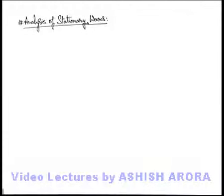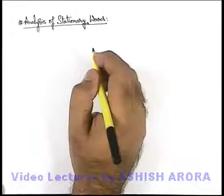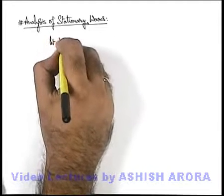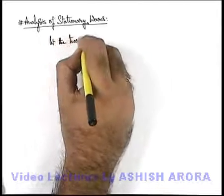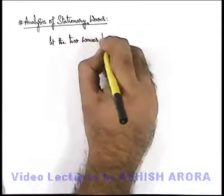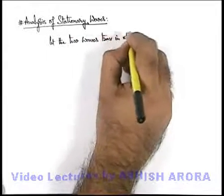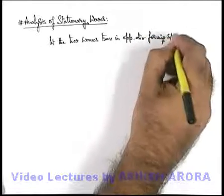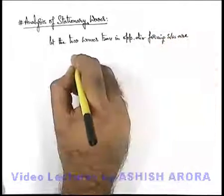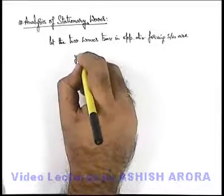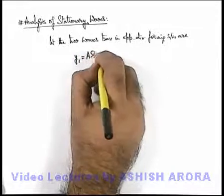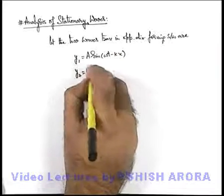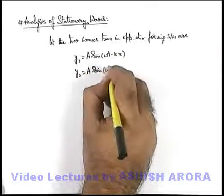Let us mathematically analyze stationary waves. For that, let us consider the two waves traveling in opposite directions forming a stationary wave. Wave 1 is given by the displacement of medium particles: y₁ = a·sin(ωt − kx), and the other one is y₂ = a·sin(ωt + kx).